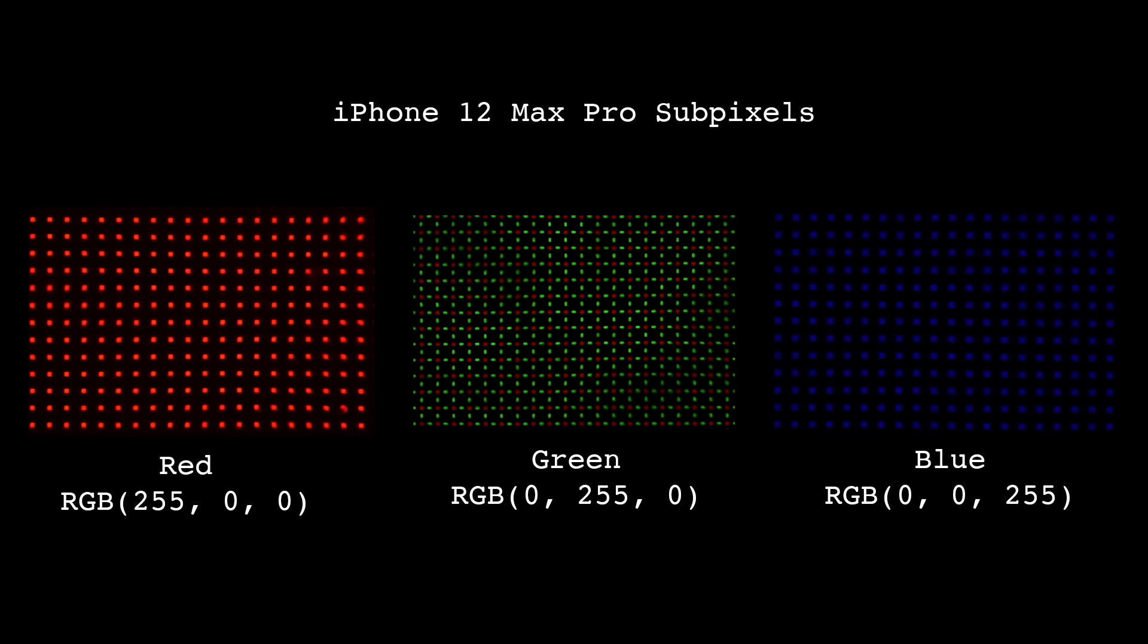This confused me because I had been operating under the assumption that the RGB values and the colors I was using would map to the sub-pixels. But that clearly wasn't the case. So what's going on here?